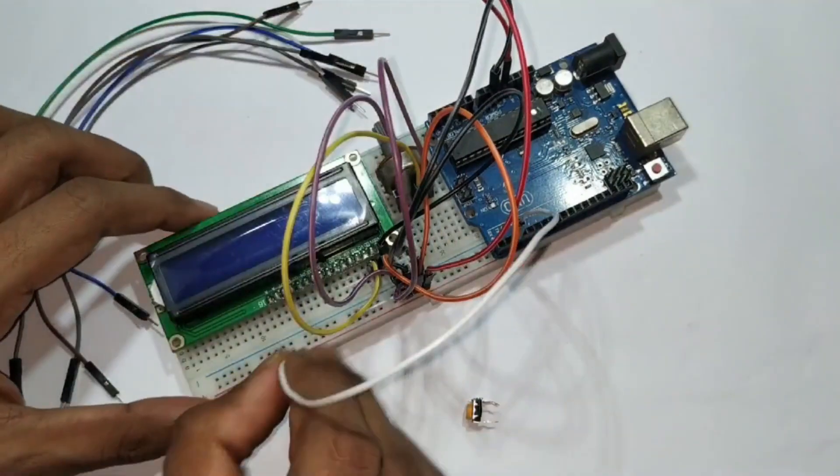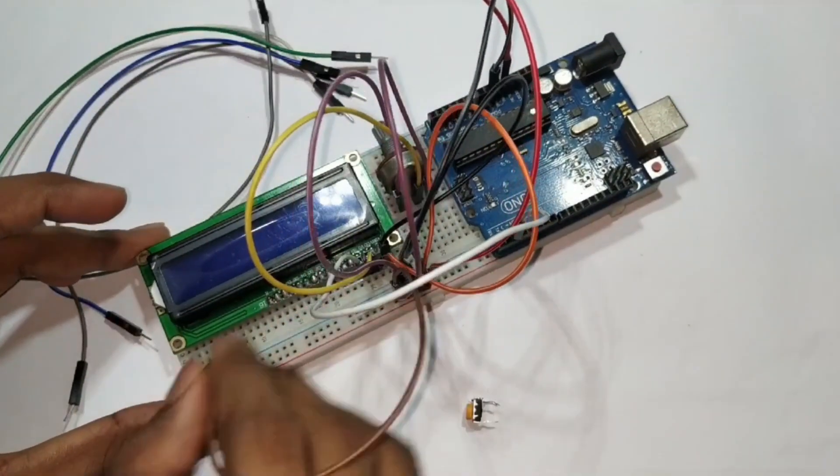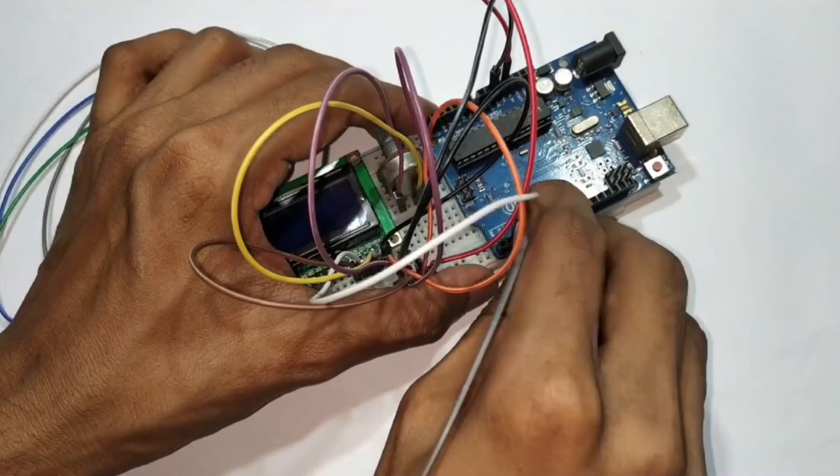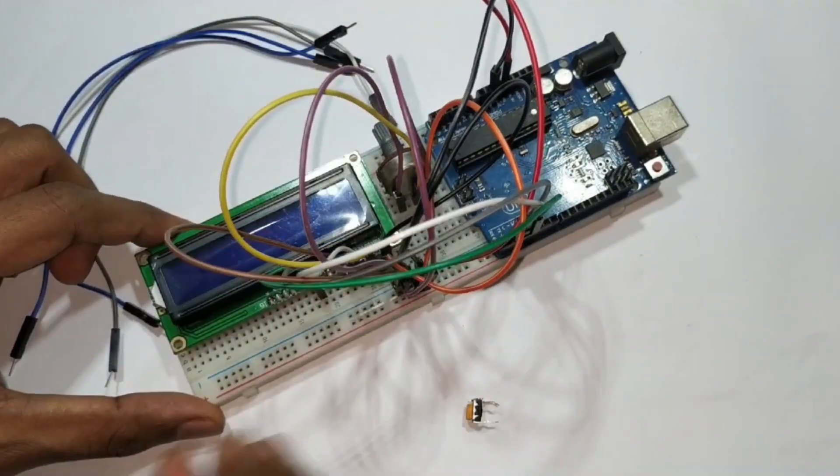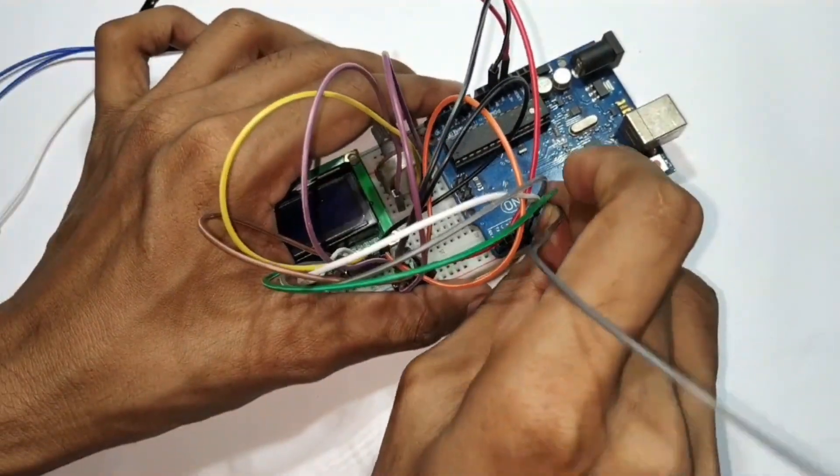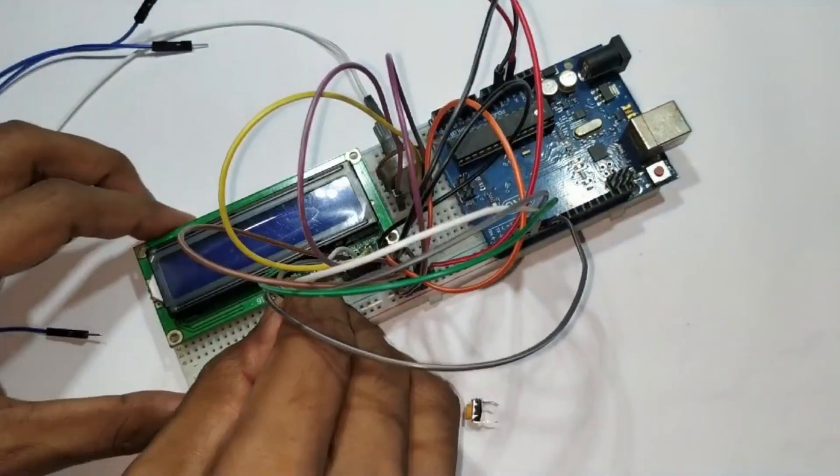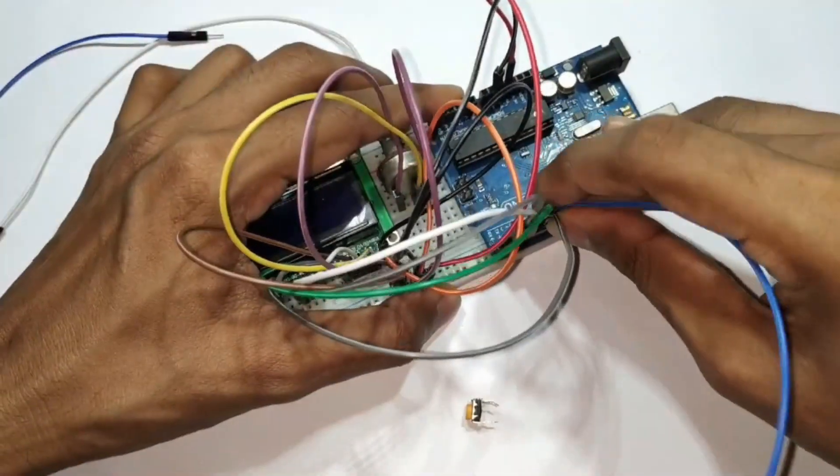After that, LCD RS pin is connected to the Arduino digital pin number 2, RW pin is connected to the ground and enable pin is connected to the digital pin number 3. Next, LCD D4, D5, D6 and D7 pins are connected to the Arduino digital pins number 4 to 7 respectively.